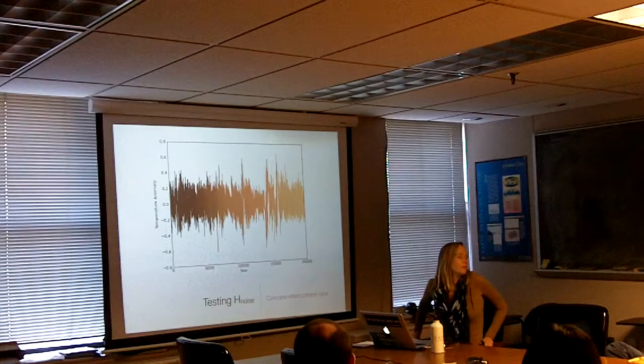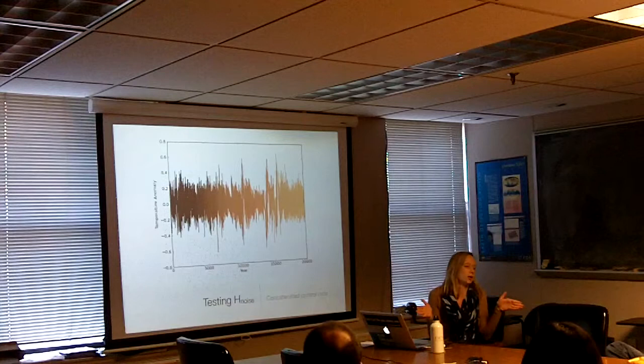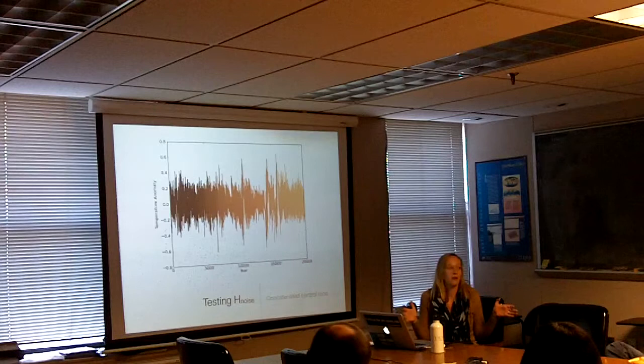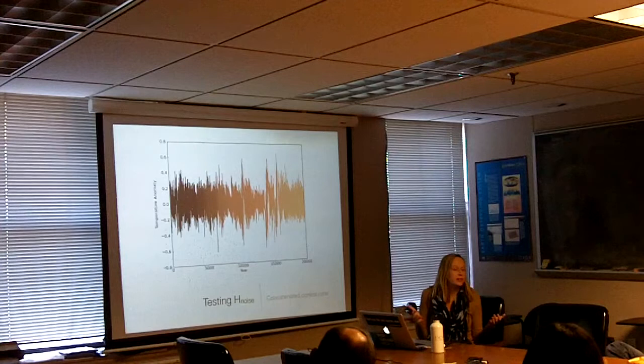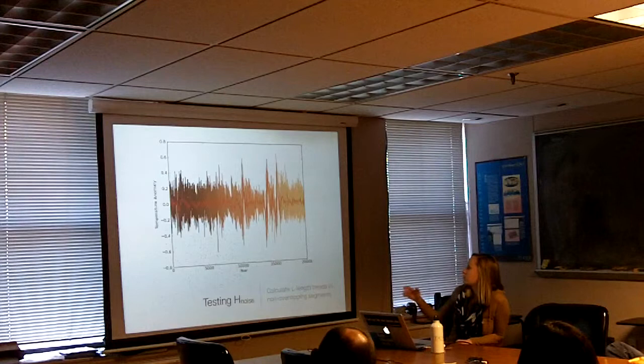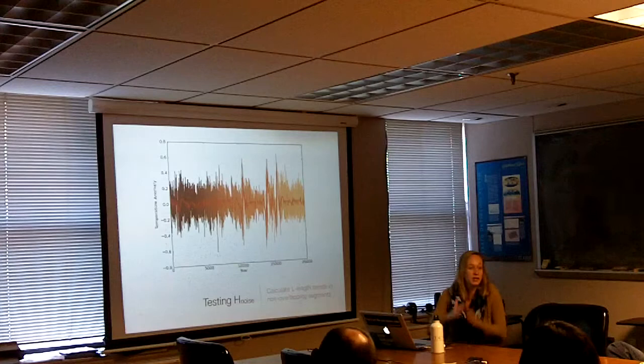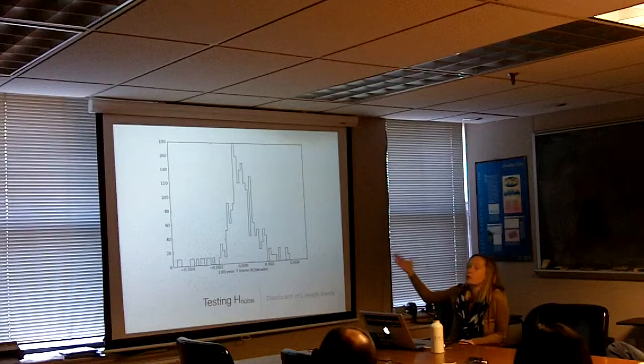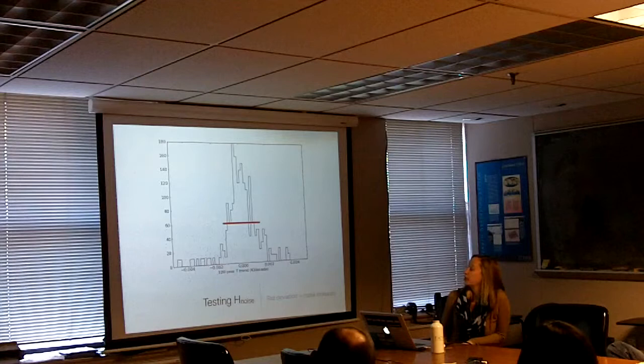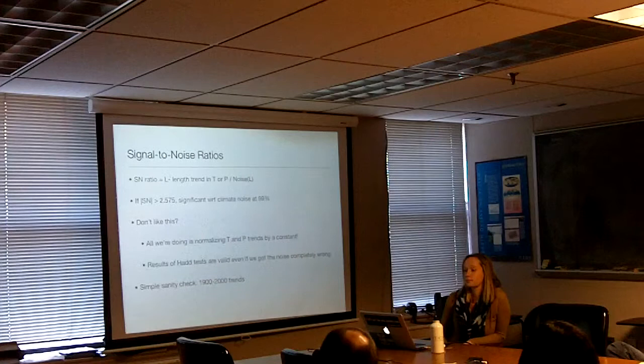To test H-noise, we take every single control run in the CMIP5 archive — not just the GIST model but all the models — and concatenate them together. This gives me a pretty conservative estimate of the amplitude of internal variability. I calculate L-length trends in non-overlapping segments of this concatenated control run and build up their distribution. This is a distribution of 100-year trends in the concatenated control runs, and the standard deviation of this is a measure of noise due to internal variability.